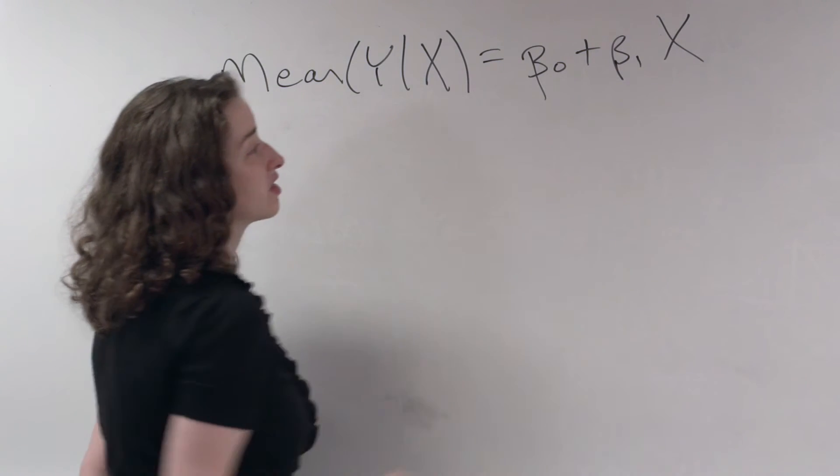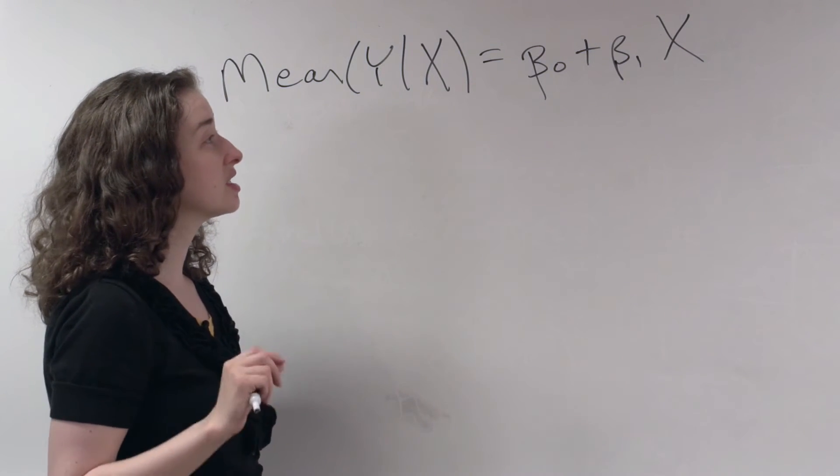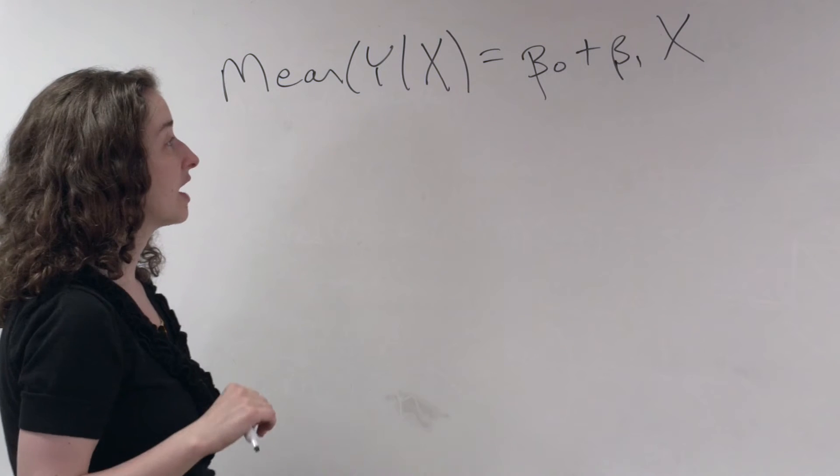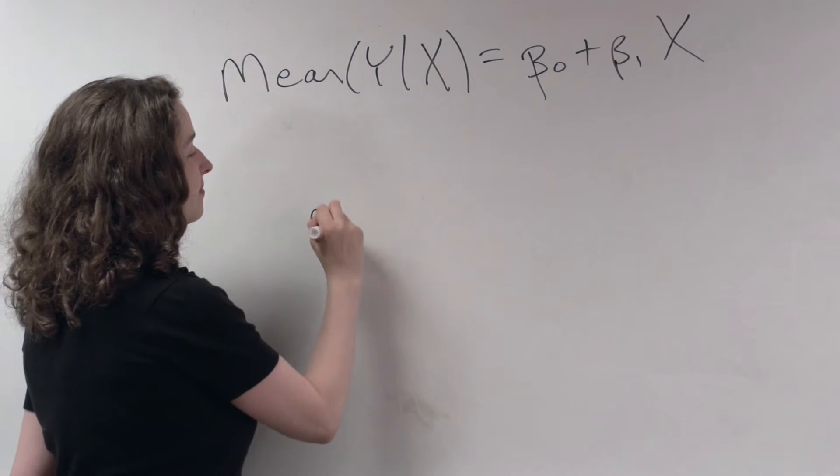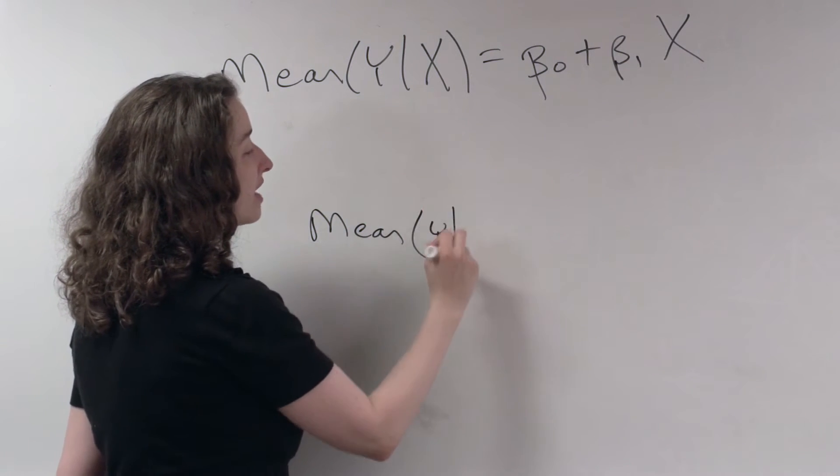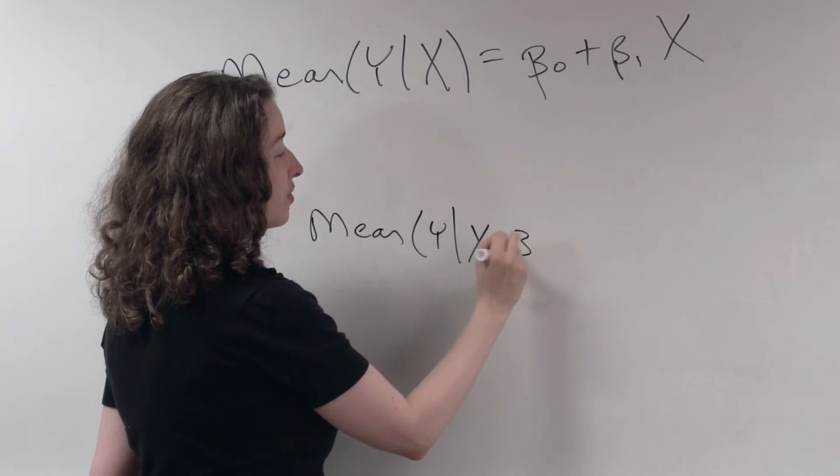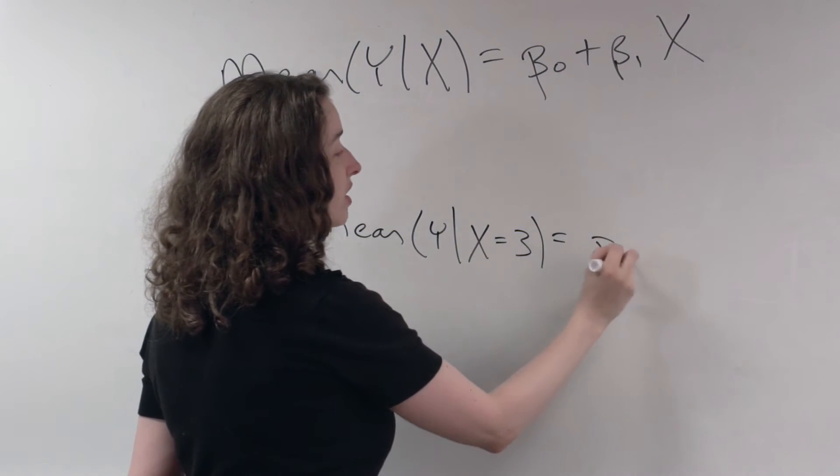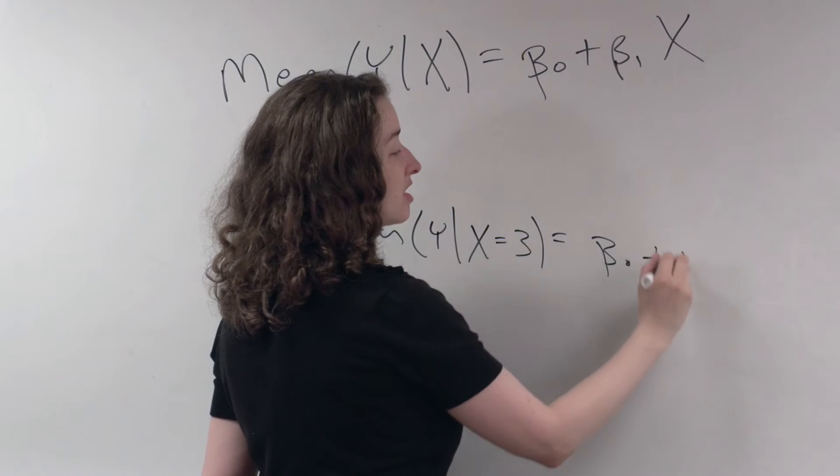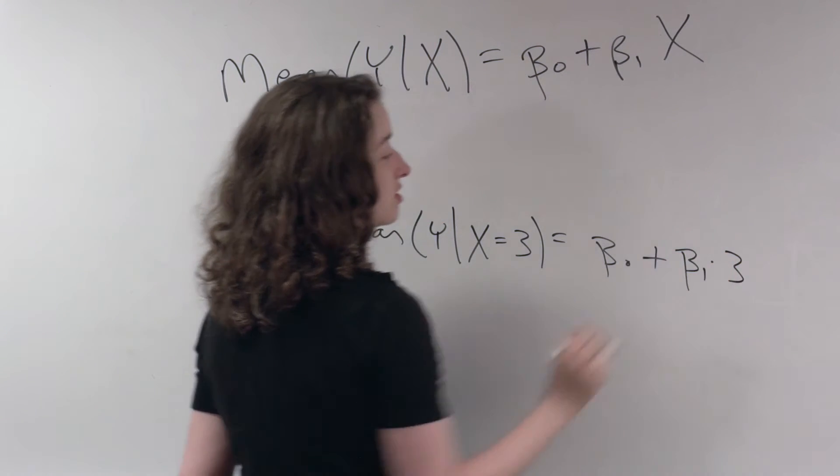So in particular, what does this statement say about the way the mean of Y given X changes when X increases? In order to make sure this is crystal clear, I'm going to do this with an actual number. So what if we say that we're interested in the mean of Y given that X is equal to 3? Well, according to this equation, if this model is exactly true, that's beta 0 plus beta 1 times 3.